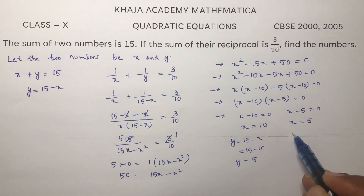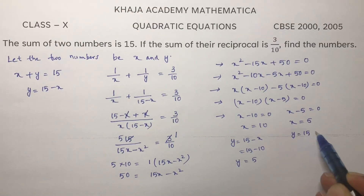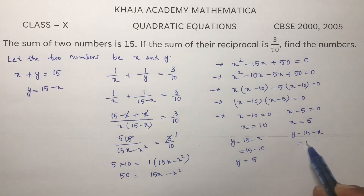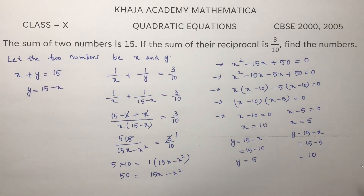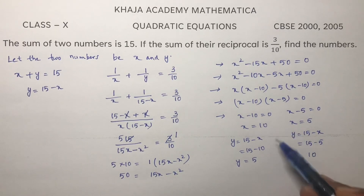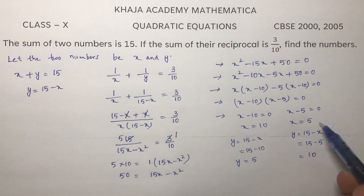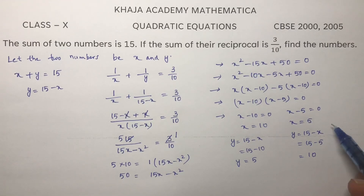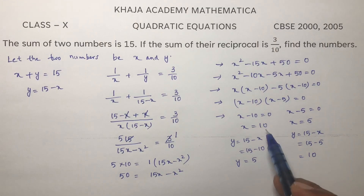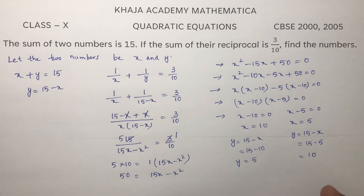If x is 5, then y will be 15 minus x, which is 15 minus 5, nothing but 10. So if x is 10, y is 5; if x is 5, y is 10. So the two numbers are 10 and 5.